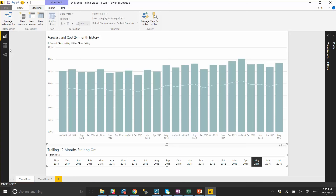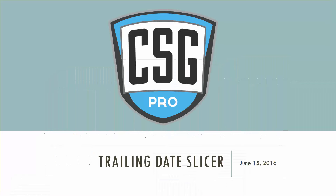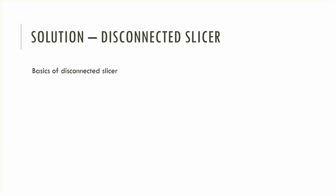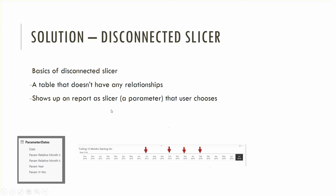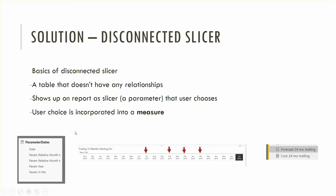So what we created is a series of DAX measures using a disconnected slicer. The basics of disconnected slicers: you create a table, it lives in your model, it doesn't have any relationships. You then use that as a slicer on your report, showing up here. This is the parameter date using a field — the actual relative month index — and whatever the user chooses is incorporated into a measure, which is what you end up using on the chart.